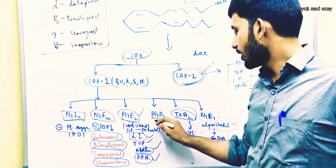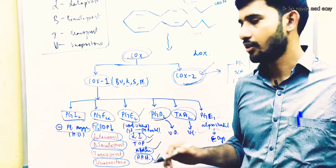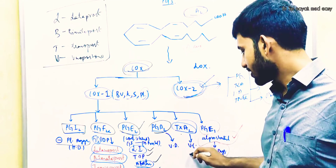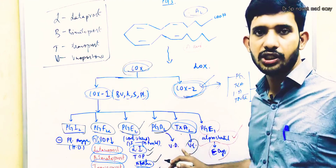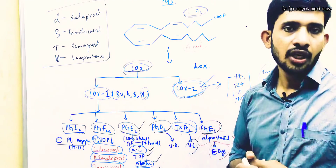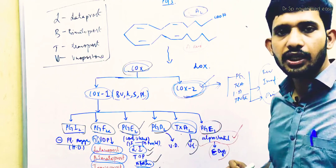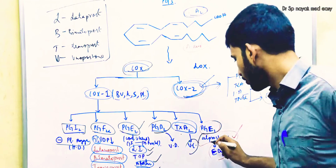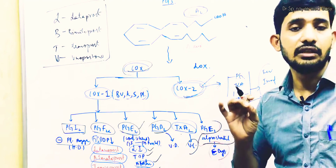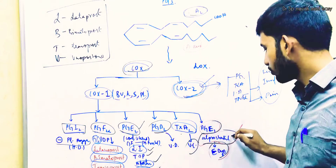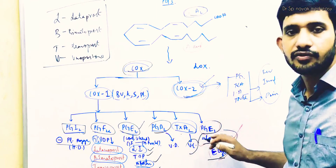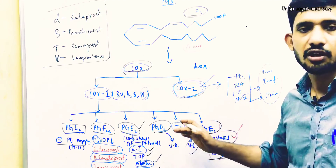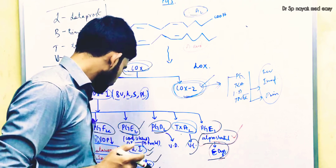Prostaglandin D2 has a vasodilatory action, while thromboxane A2 constricts blood vessels — that is their main pharmacological action. Prostaglandin E1 has a very important analogue called alprostadil. Alprostadil is a prostaglandin E1 analogue used in erectile dysfunction, mainly in males. These are examples of the different prostaglandins, their pharmacological actions, their analogues, and their uses.